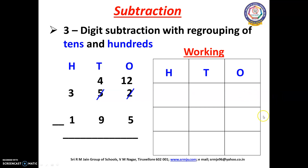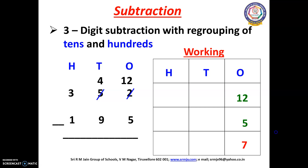Now we can subtract 12 minus 5. Open your fingers, children: 5 after — 6, 7, 8, 9, 10, 11, 12. How many fingers have you opened? Yes, we have opened 7 fingers. So we have to write 7 here.